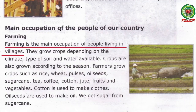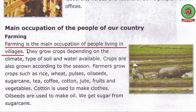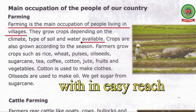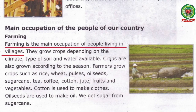Now come to the reading. Main occupation of the people of our country: farming. Farming is the main occupation of people living in villages. They grow crops depending on the climate, type of soil and water available. Underline the word 'available' and write the meaning: within easy reach. Crops are also grown according to the season. The climate, type of soil and availability of water are the requirements for growing crops.